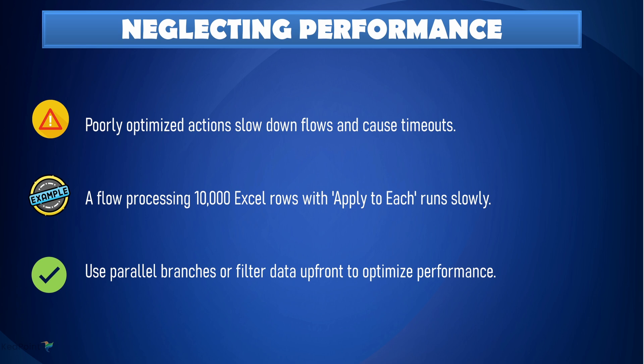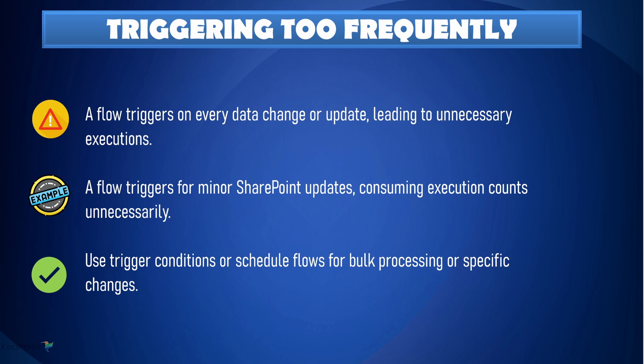Seventh: do not neglect performance. Flows can get bogged down if they are not optimized, especially when dealing with large data sets. For example, if you are processing thousands of rows in Excel, it could take forever to complete. Instead of looping through every item, use filters upfront to minimize the data you are working with. You can also use parallel branches to improve performance and reduce processing time.